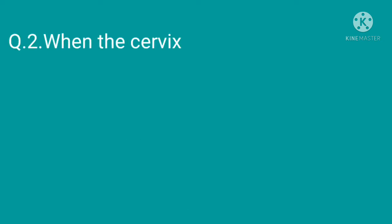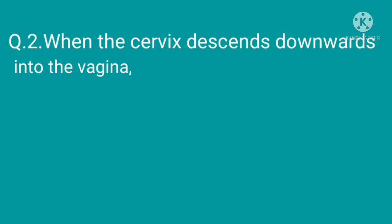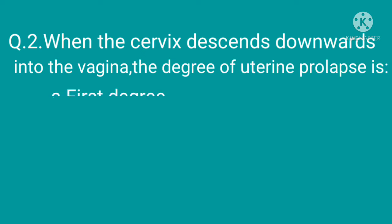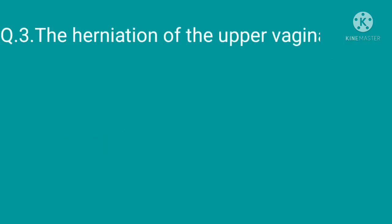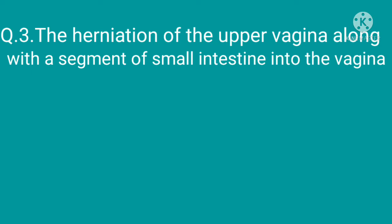Question 2: When the cervix descends downwards into the vagina, the degree of uterine prolapse is — option A: first degree, option B: second degree, option C: third degree, option D: fourth degree. The correct option is option A, first degree.